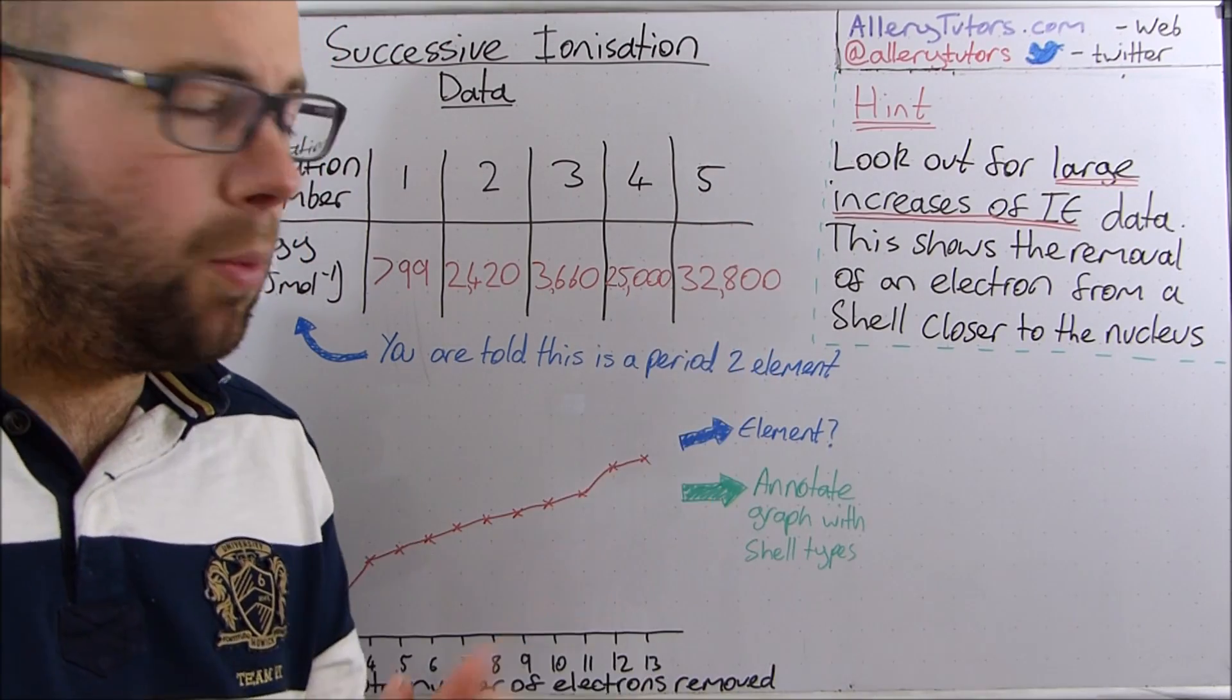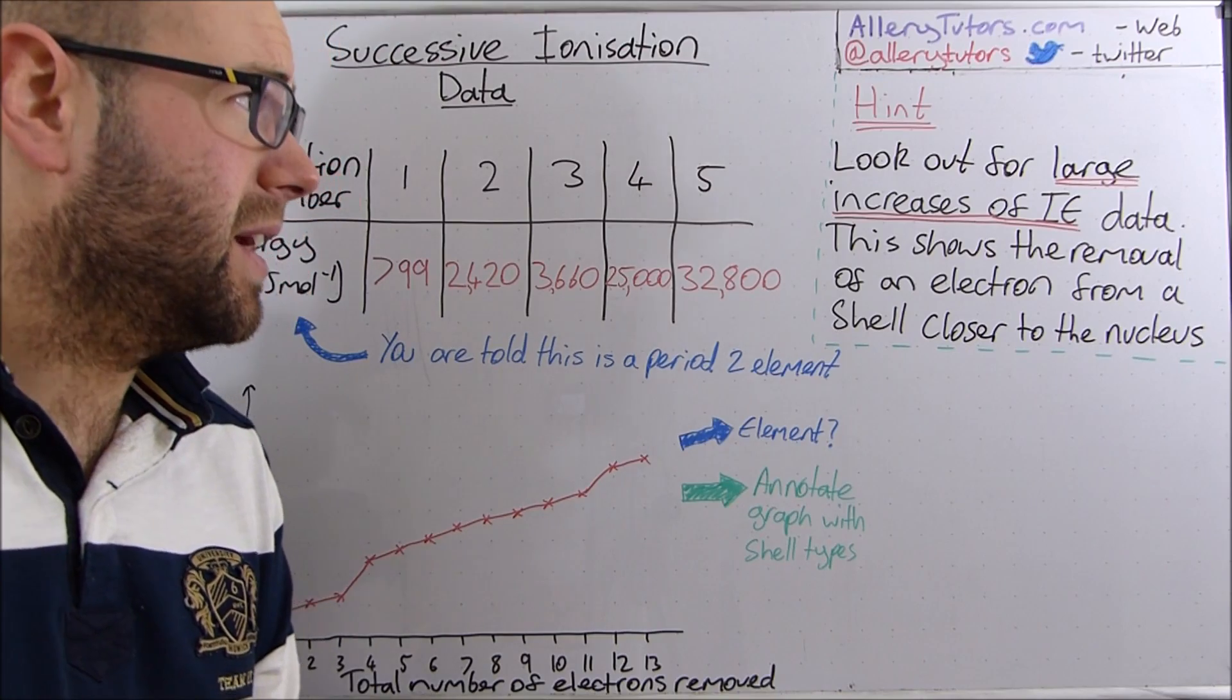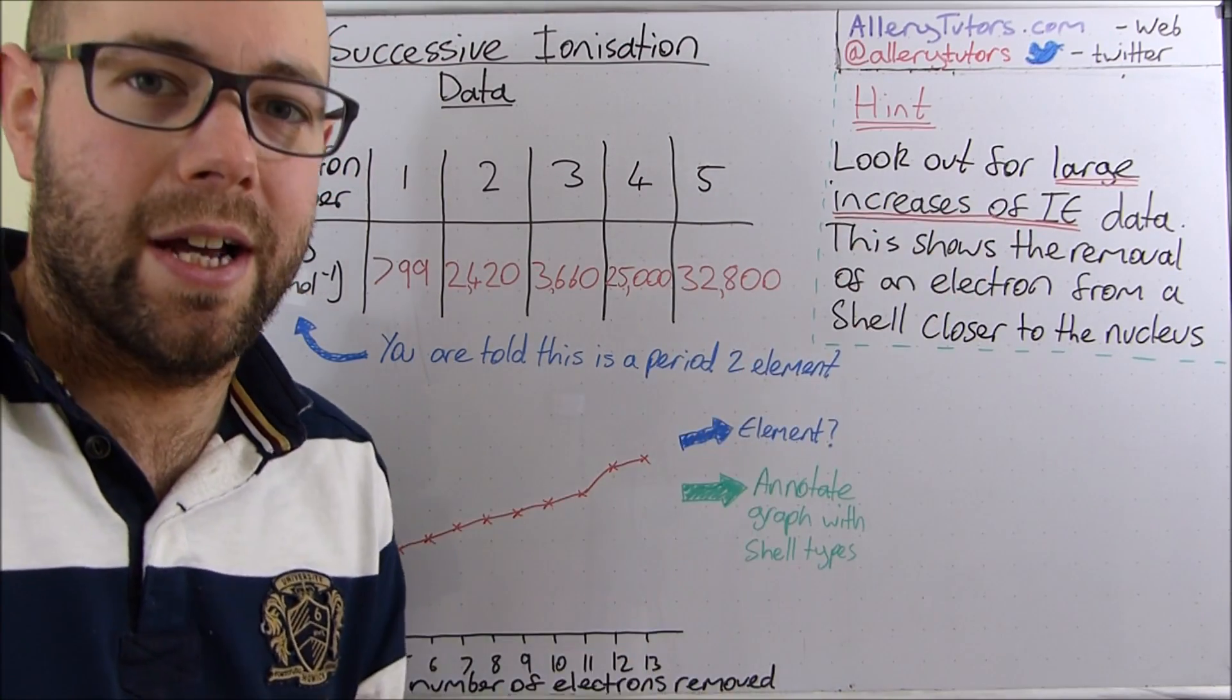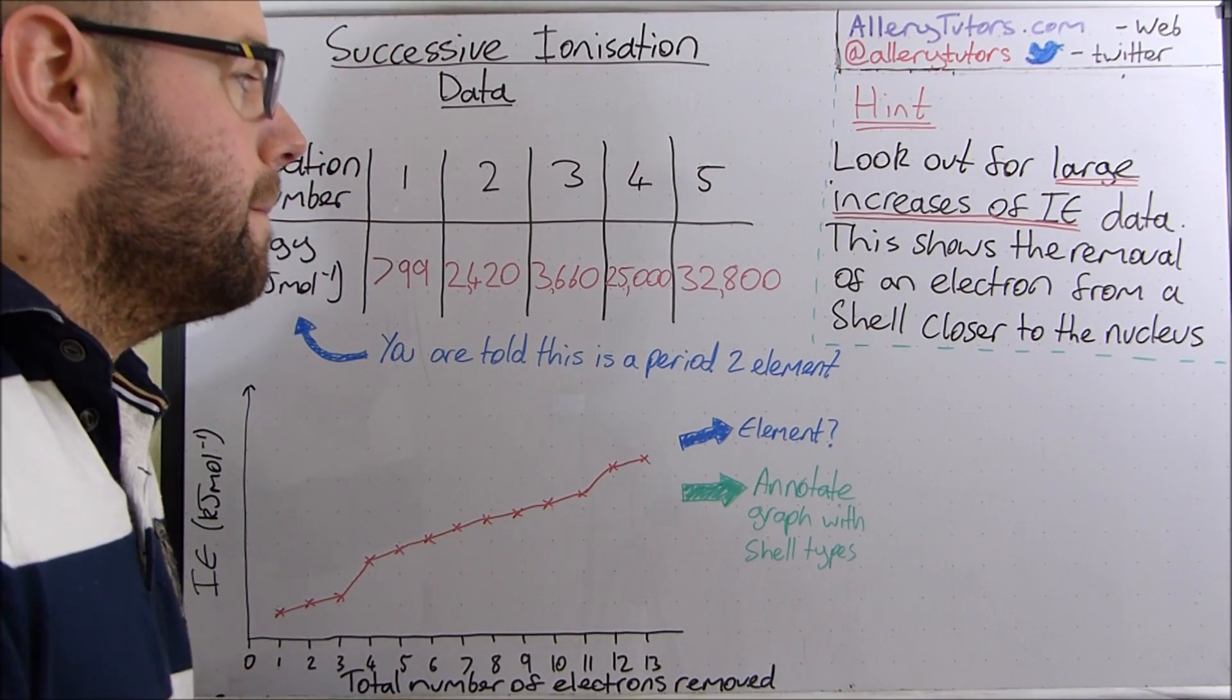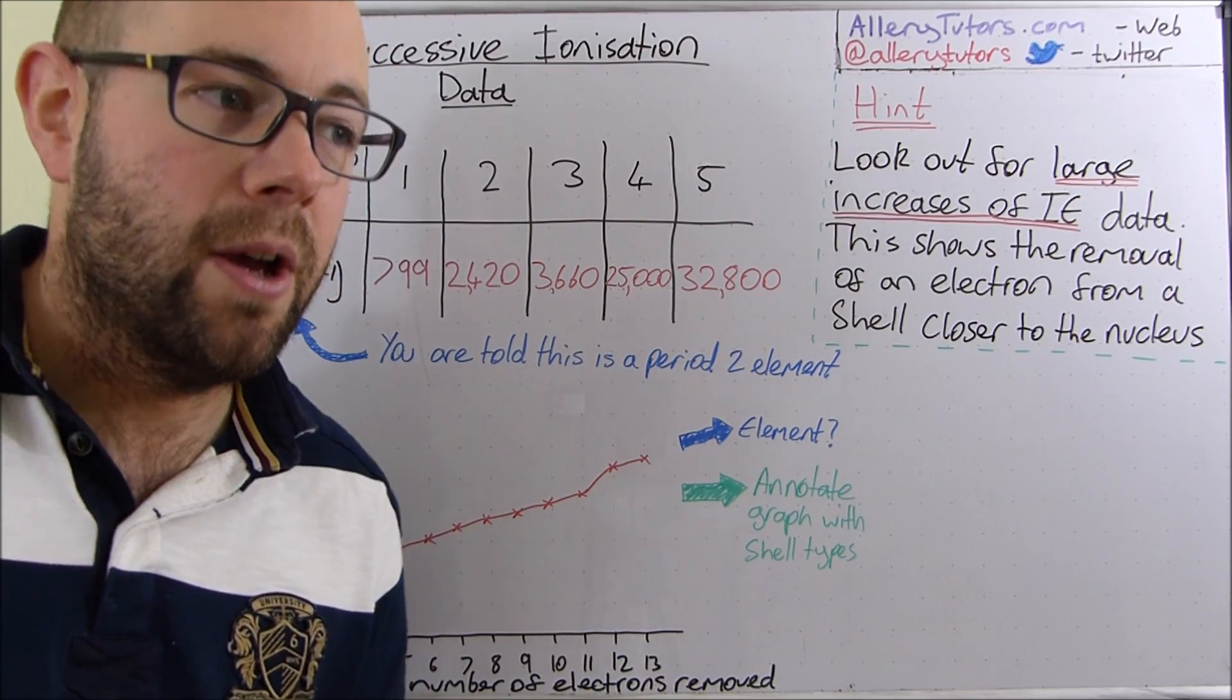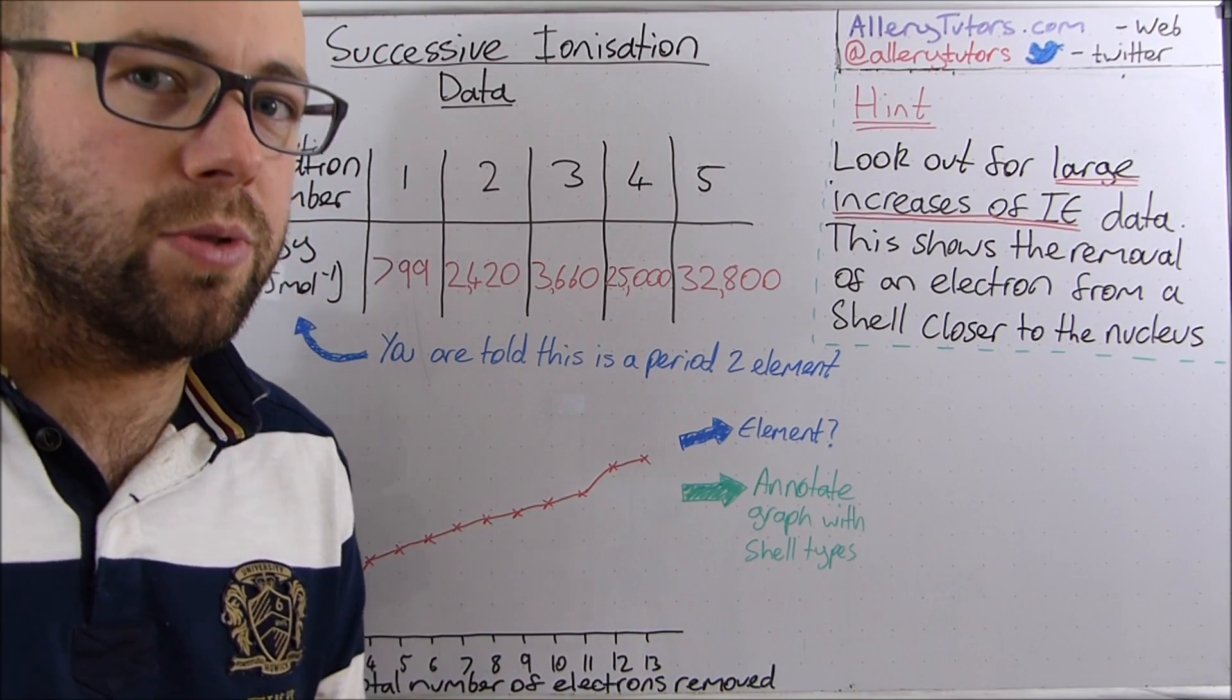What we're going to do is look at a very specific thing. We're looking for a large increase in ionization energy. That's the really important thing and the reason why is because this shows the removal of an electron from a shell that's much closer to the nucleus.